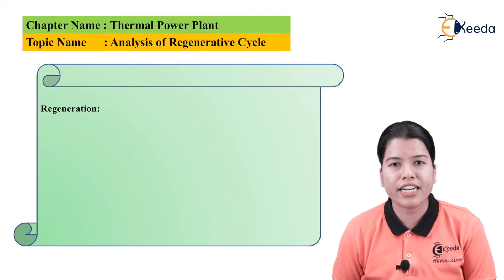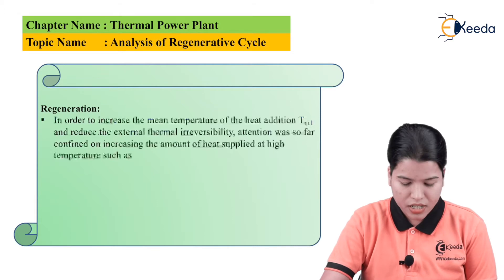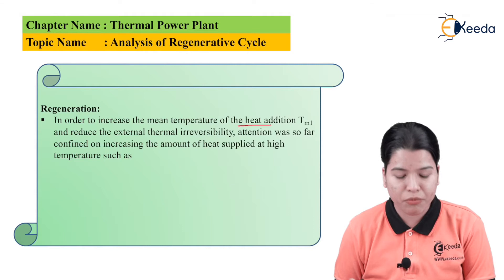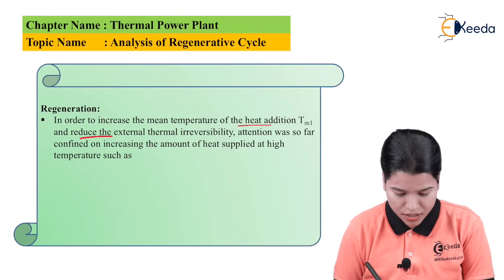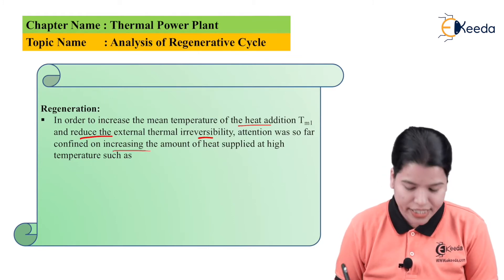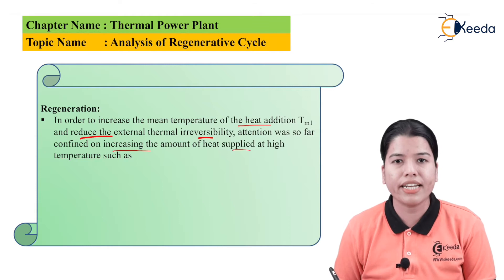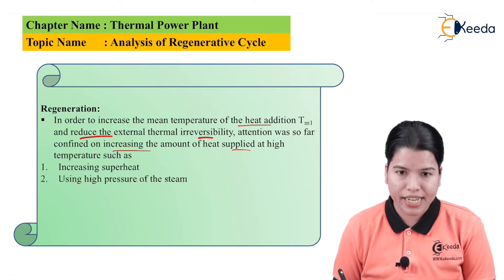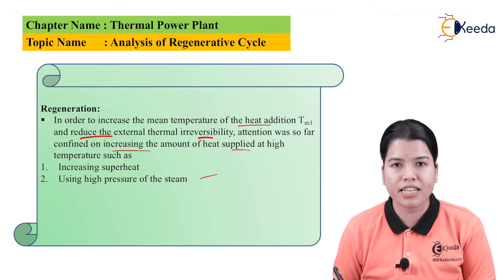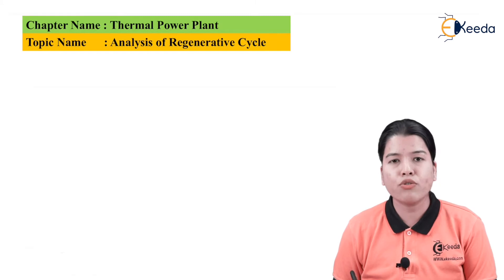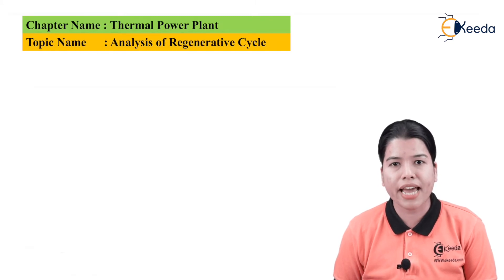First of all, let us study what is Regeneration. In order to increase the mean temperature of the heat addition T_M1 and to reduce the external thermal irreversibility, attention was focused on increasing the amount of heat supplied at high temperature. This can be done by: first, increasing the superheat; second, using high pressure of the steam; third, using high temperature of the steam; then using reheat. By using all these processes the temperature can be increased.